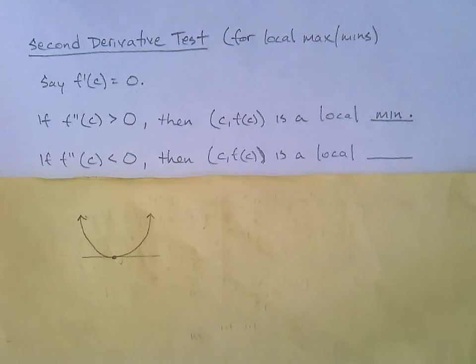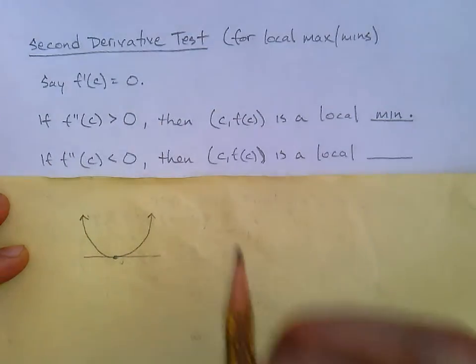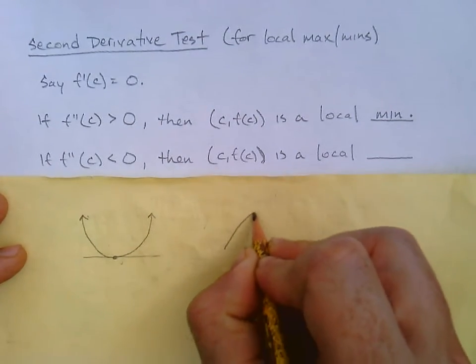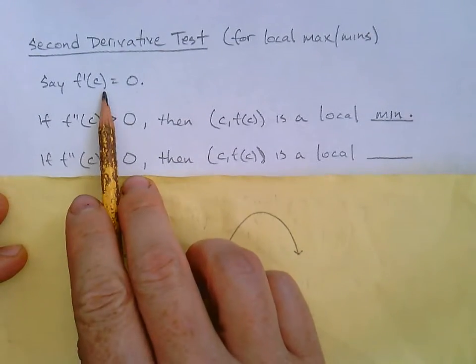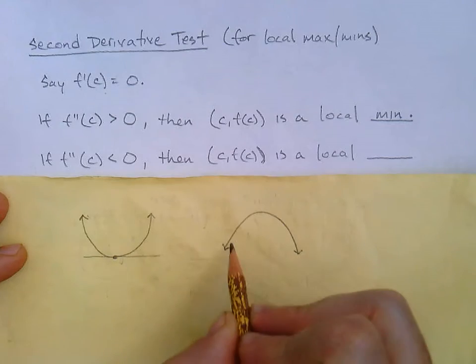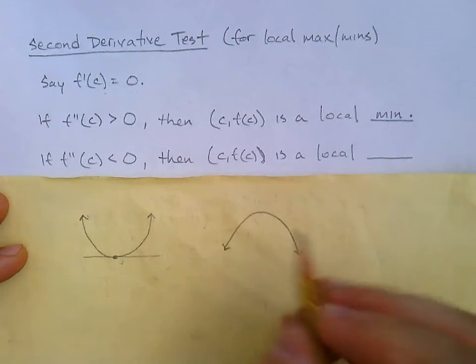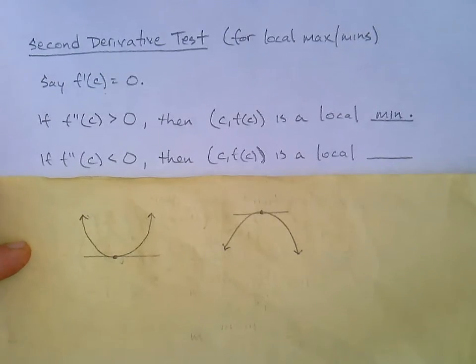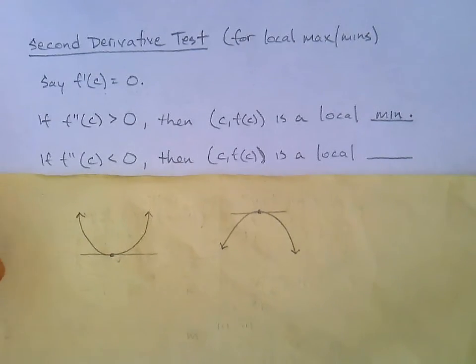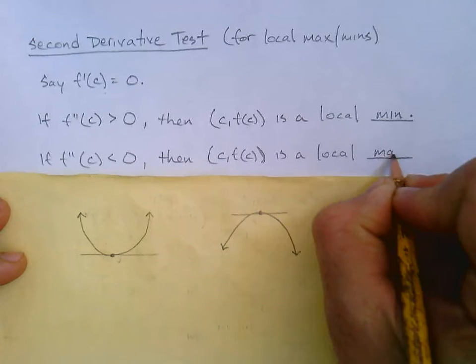What if the second derivative at c was negative? We can probably guess. Then the point (c, f(c)), well, if it's negative, that means it's concave down. And if also we know the second derivative is zero, then it must be the point at the top on that concave down because we know the tangent line is horizontal. And that's a local max.